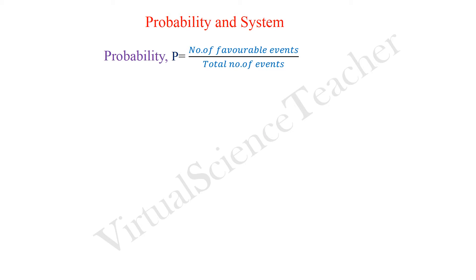Let's do some examples. Suppose we have an unbiased coin, so it has two sides — head and tail. I am going to toss it three times. I want to find out the probability of getting exactly one head. One coin toss has two possibilities, so after throwing the coin three times, the total number of possibilities is 2³ = 8, since each toss is independent.